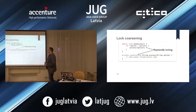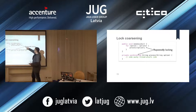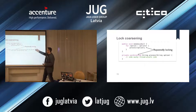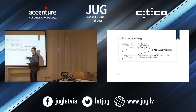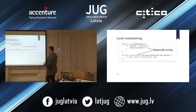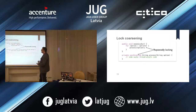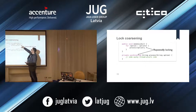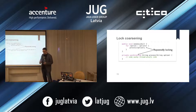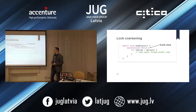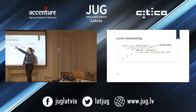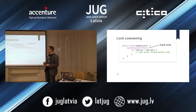Another thing JIT tries to optimize is related to locking. In this case, we're calling a synchronized method inside a loop. Locking is quite expensive - especially with multiple CPU cores, it can be very costly. But because JIT sees we're doing that on every iteration of the collection, it can apply lock coarsening - moving the lock outside the loop. This is still expensive, but less so than locking inside a loop.